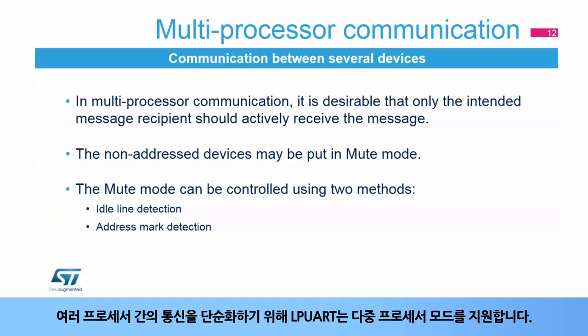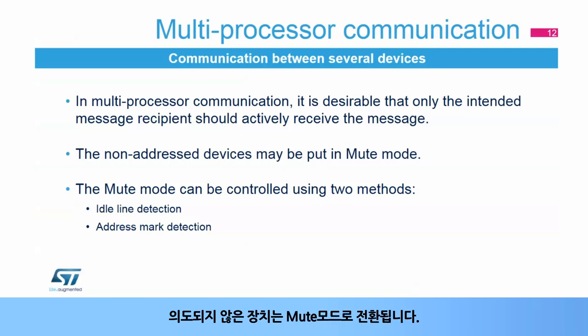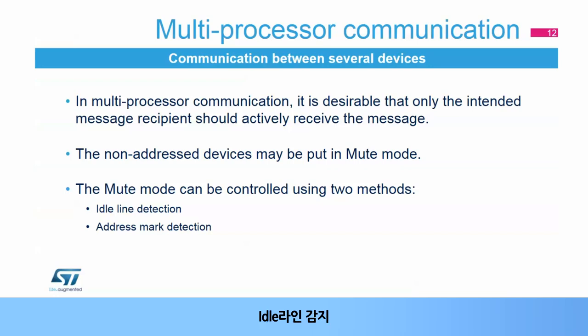To simplify communication between multiple processors, the LPUART supports a special multiprocessor mode. In multiprocessor communication, it is desirable that only the intended message recipient should actively receive the message. Non-addressed devices may be put in mute mode using two methods: idle line or address mark detection. The LPUART can enter or exit mute mode using idle line detection or address mark detection.